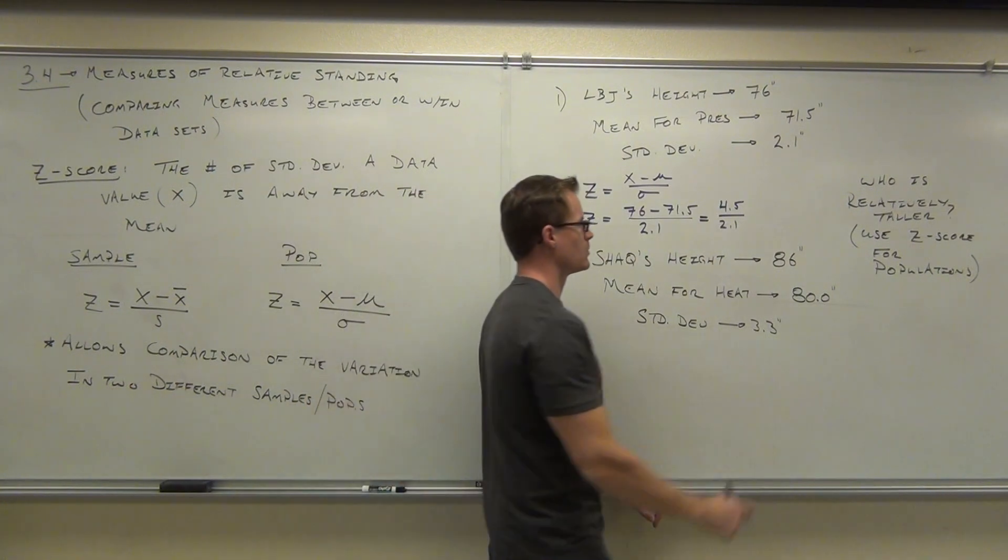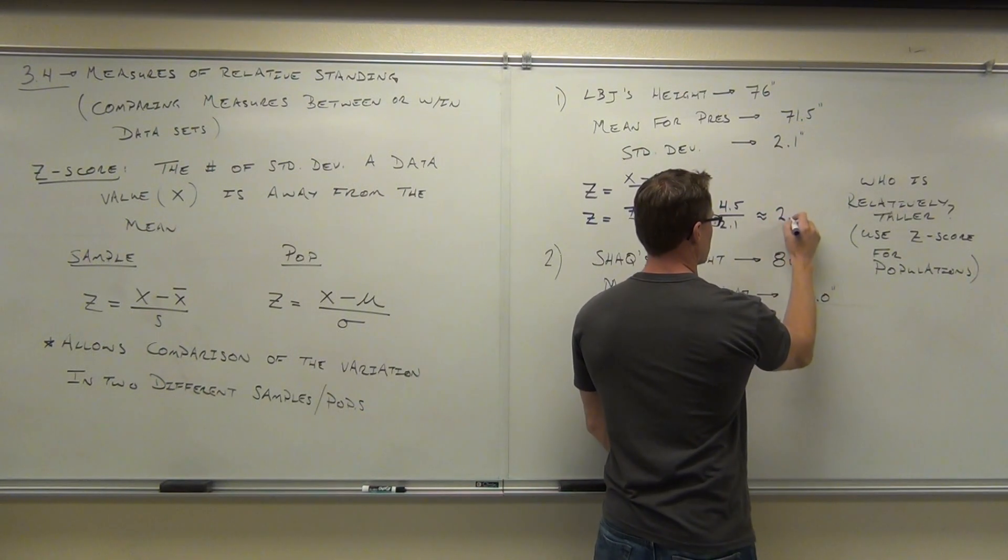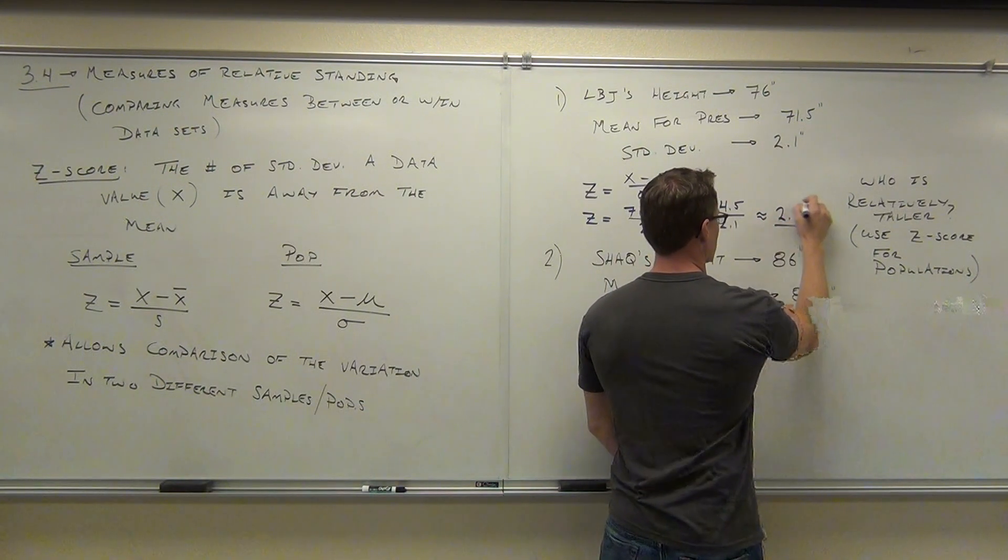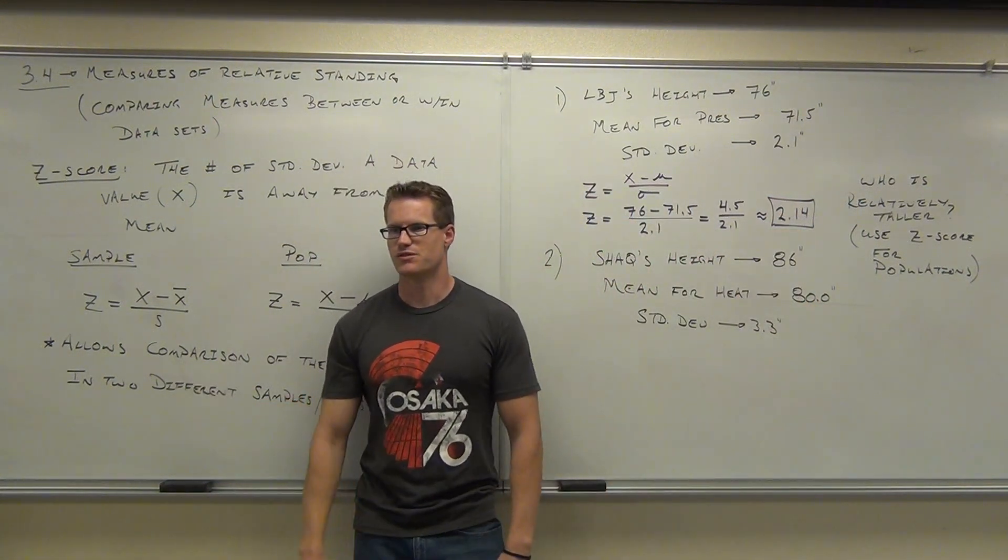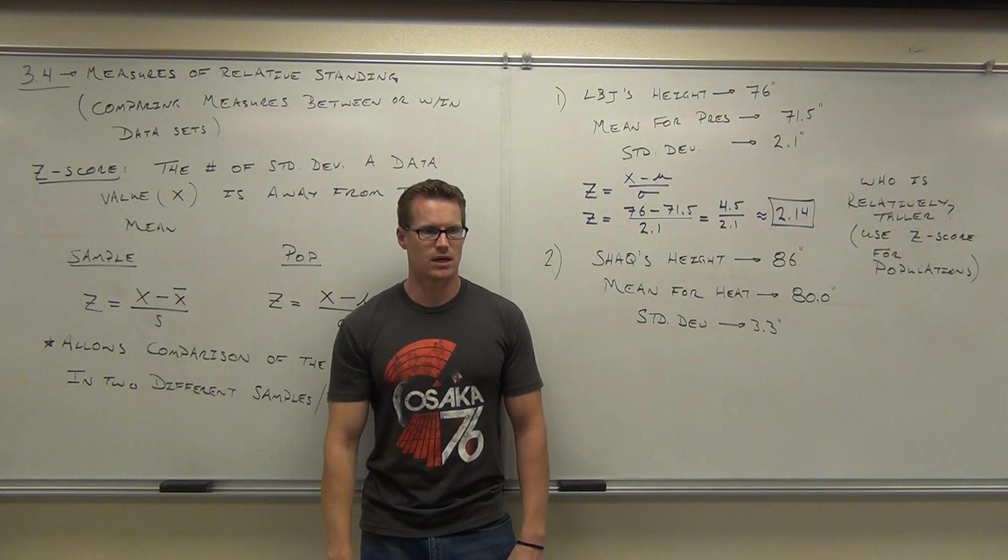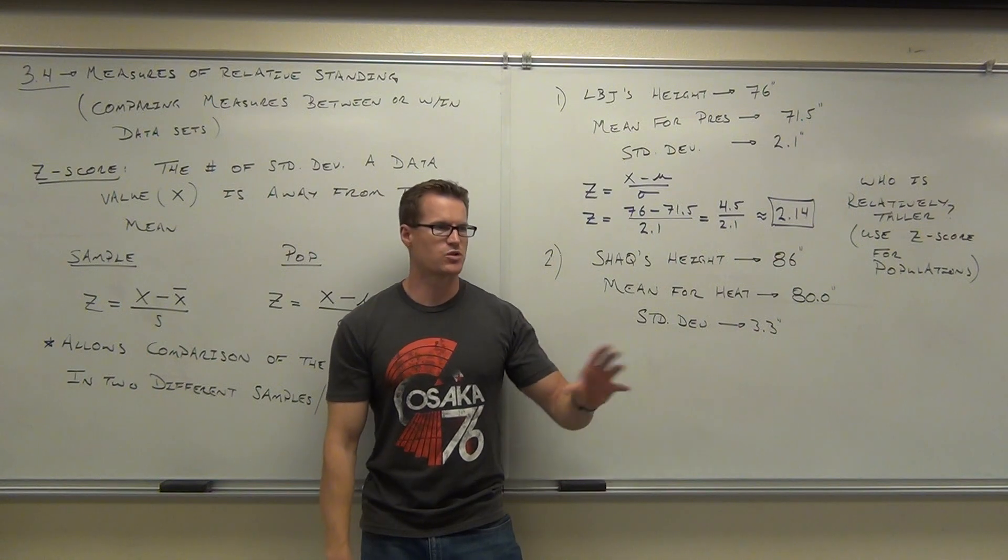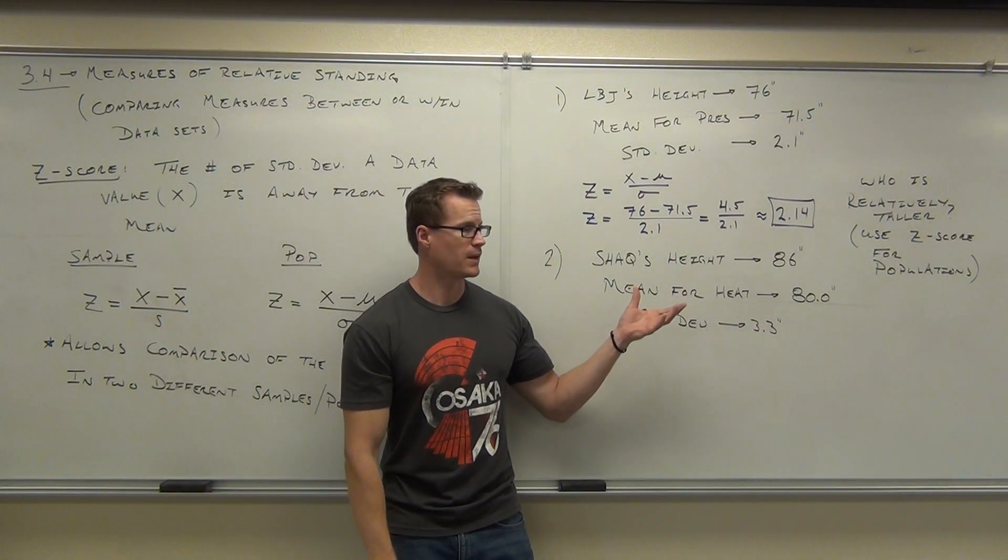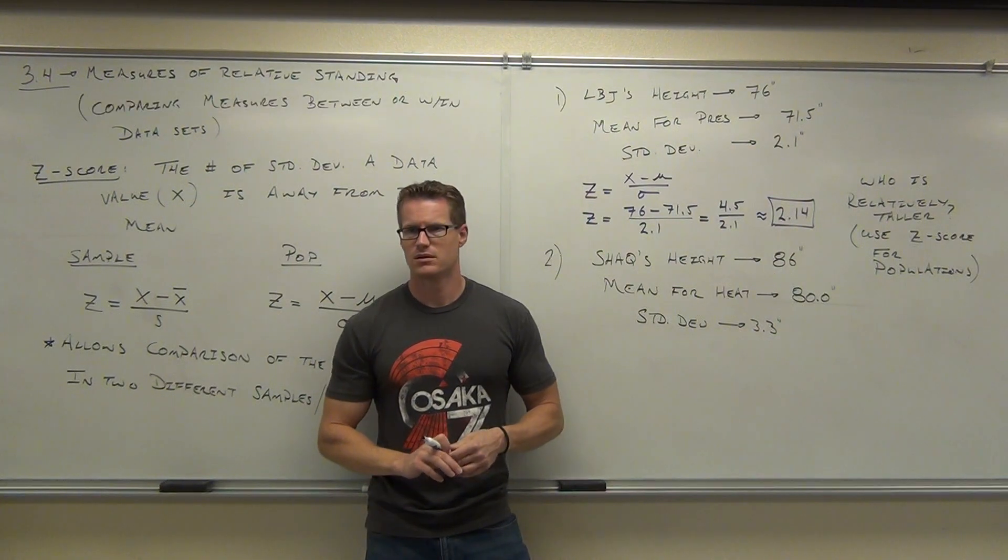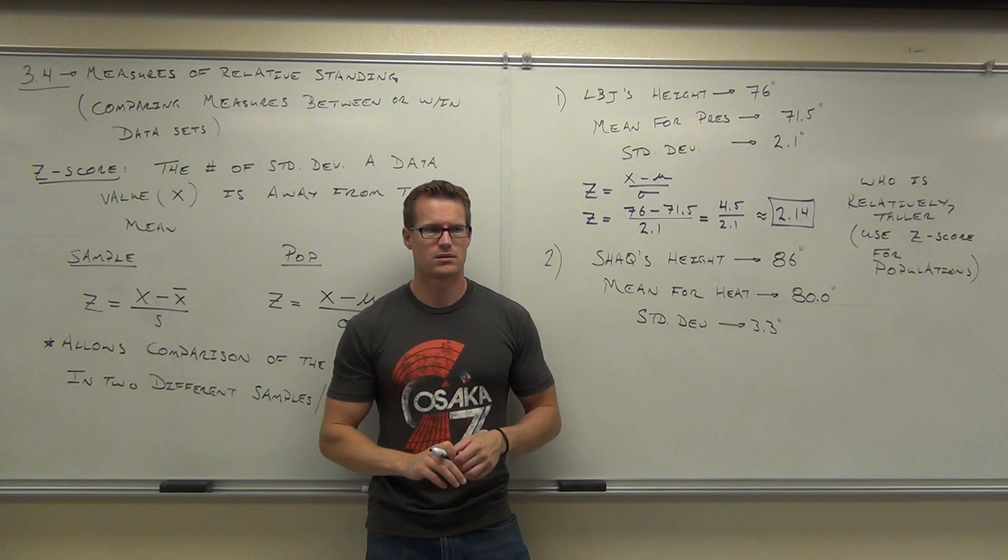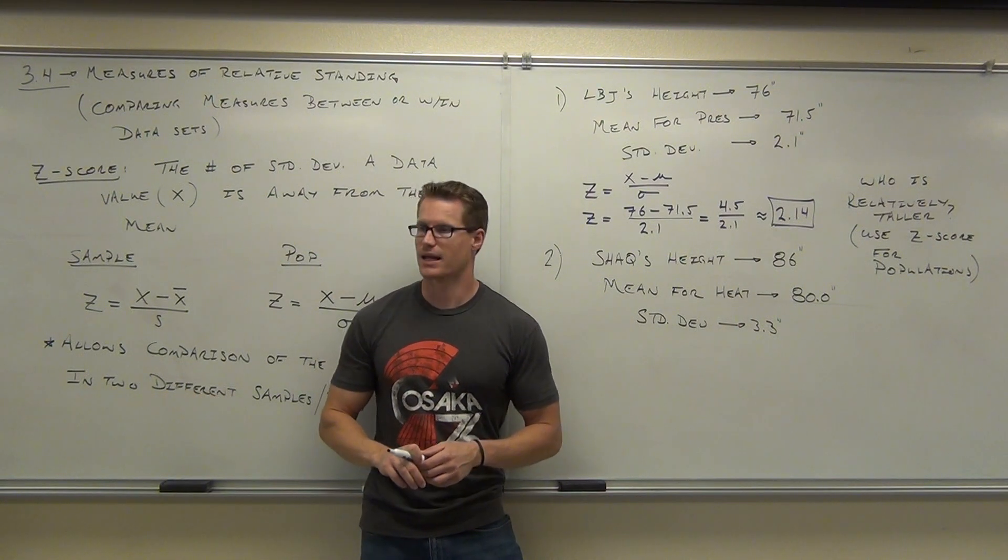Divided by 2.1, so we're going to do 4.5 divided by 2.1 and get 2.14. Great. We got a number. 2.14. This is useless if you don't know what that number means. 2.14. Great. I don't want you to just get through this class just using numbers where they're appropriate. I want you to understand what we just calculated. Anyone have any idea what we just calculated?